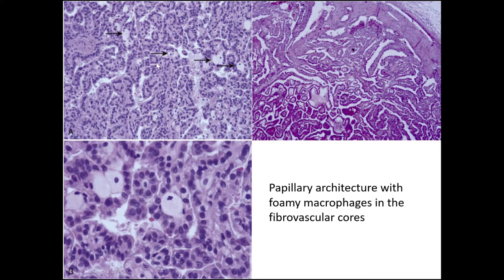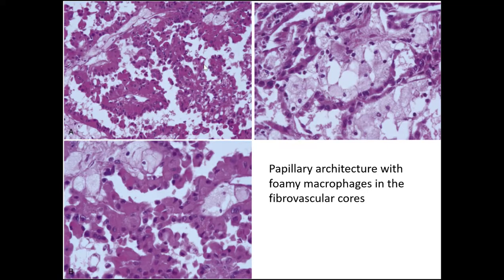Here are some examples of papillary architecture, most notably on the upper right, and foamy macrophages within the cores of the papillae. This can be seen in both type 1 and type 2, but is generally more prevalent in type 1. Here's another example — this case with more cytoplasmic eosinophilia, but still foamy macrophages within the fibrovascular cores.